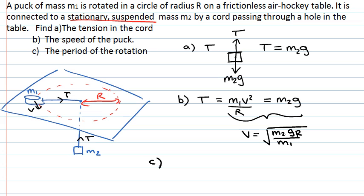of the rotation is also given the symbol of a capital T. The period is the time taken for one complete rotation, so time taken equals the distance travelled, which in this case is the circumference of the circle. That's given by 2πR divided by the speed, and we already have an expression for